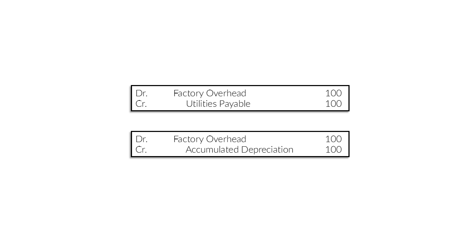If you remember with indirect material, we credited raw materials inventory and transferred it to factory overhead by debiting factory overhead. Same thing with indirect labor costs — we did that with factory payroll, we credited it, and transferred the cost to the factory overhead. So same idea here — we're just lumping it all into the factory overhead account, and you will see why later on.